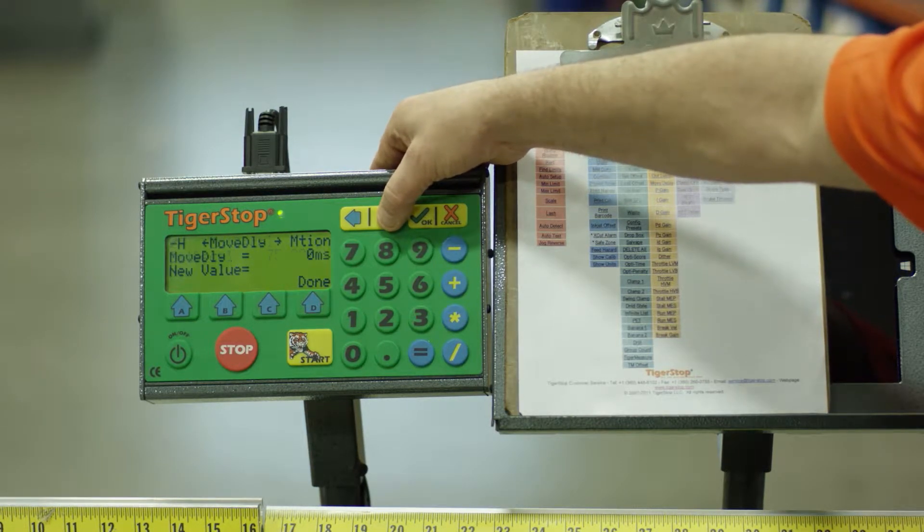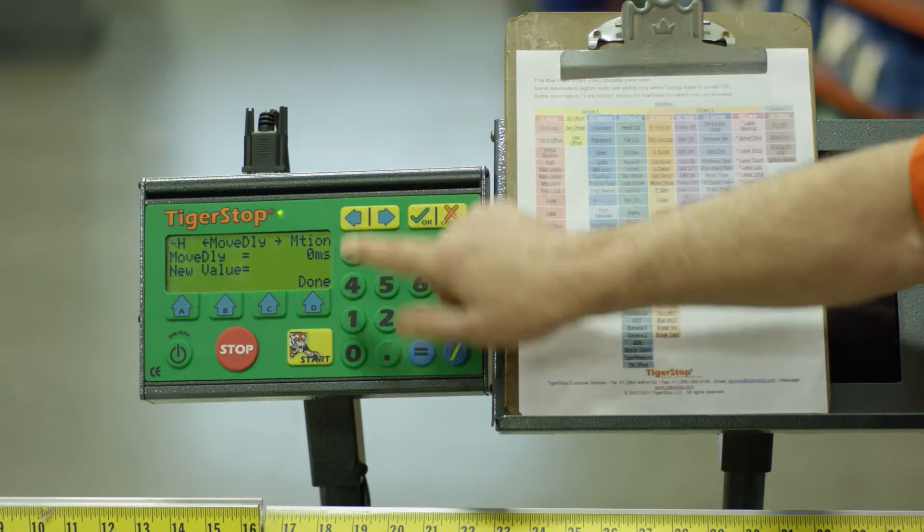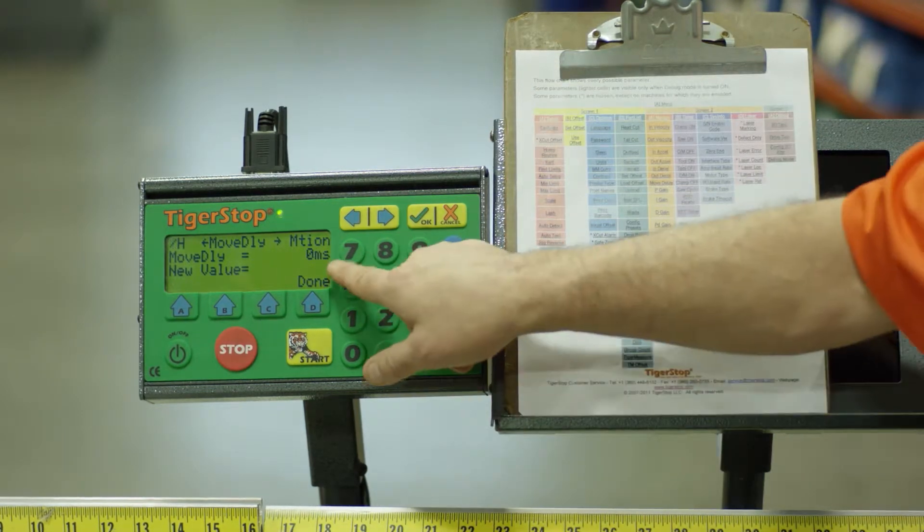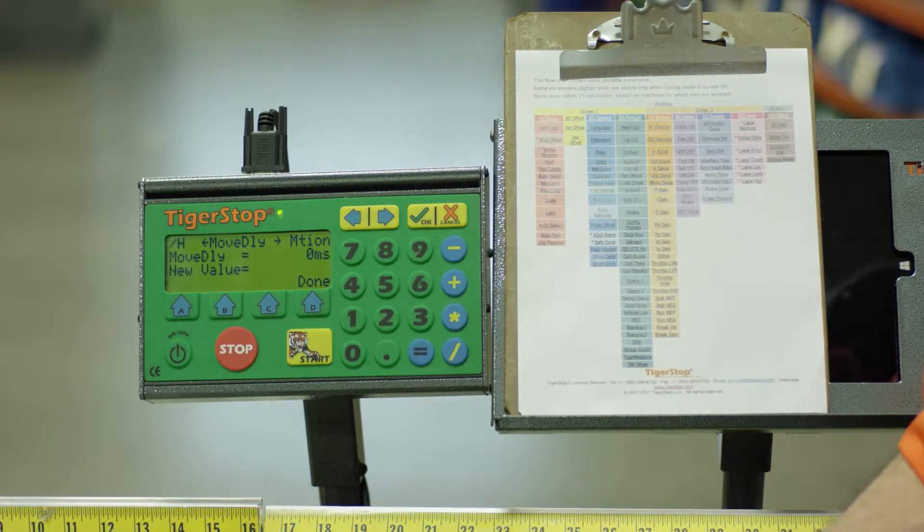I'm going to scroll down till I see move delay. You'll notice I passed by it. I hit the left arrow and there it is. From the factory, the move delay is set to zero MS. MS stands for milliseconds.